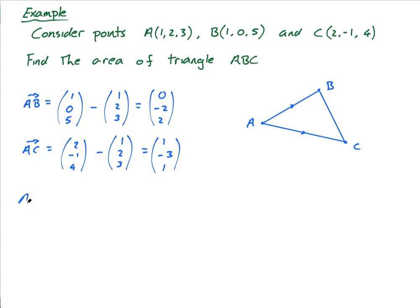Great. Now I know the area is equal to a half times the magnitude of AB cross AC. So I have to find AB cross AC. So let's do it. I'm going to do (0,-2,2) cross (1,-3,1). And I'm going to use my formula for the cross product that hopefully you guys can do at this stage.